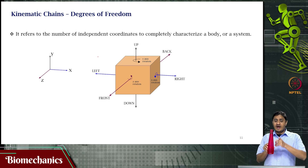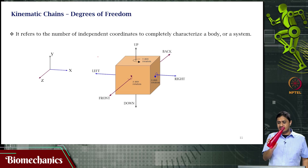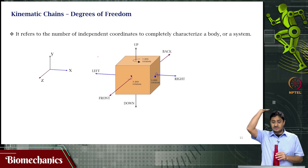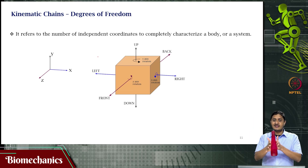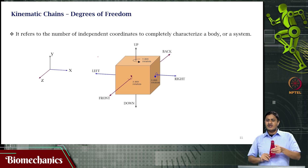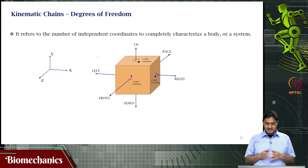For example, about the antero-posterior axis — the axis between you and the screen — it can rotate like this. About the superior-inferior axis, the axis going from top to bottom, it can rotate like this. Then about the axis going from left to right, it can rotate like this. So there are three rotational degrees of freedom and three translational degrees of freedom.